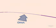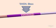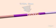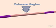Transcription begins with a strand of DNA, which is divided into several important regions. The largest of these is the transcription unit — the portion of the DNA that will be used to produce RNA. Upstream of the transcription unit is the TATA box. An enhancer region may also be involved.